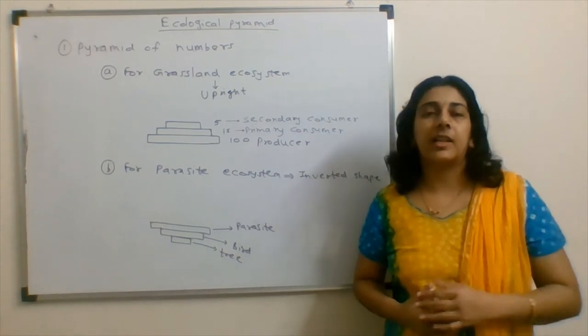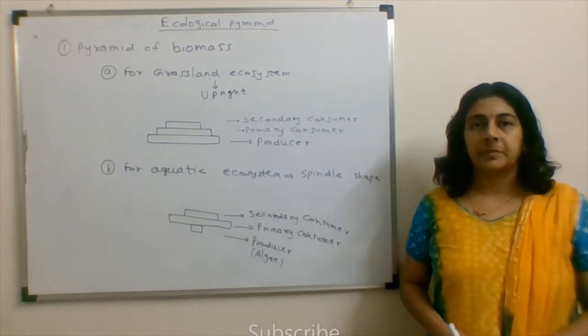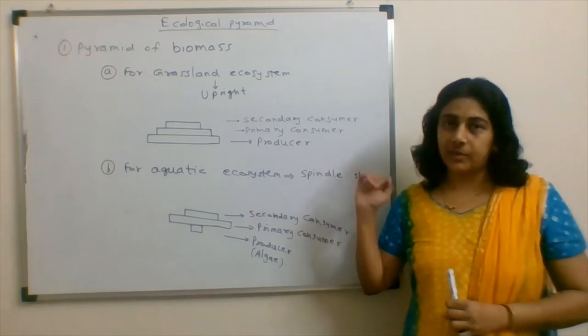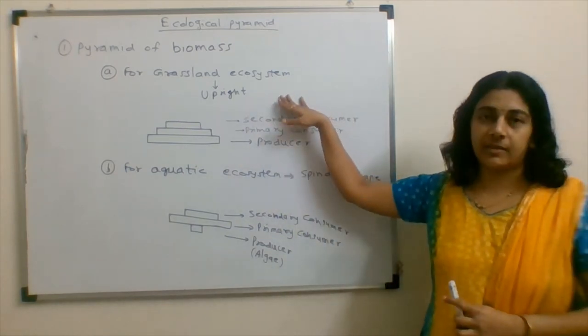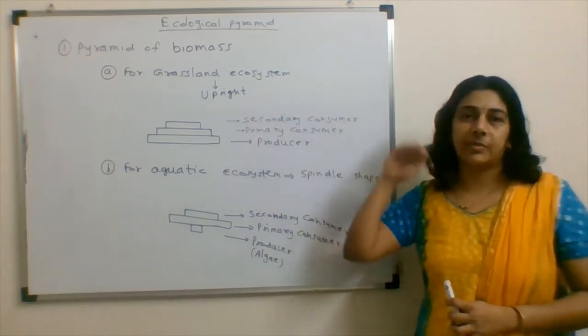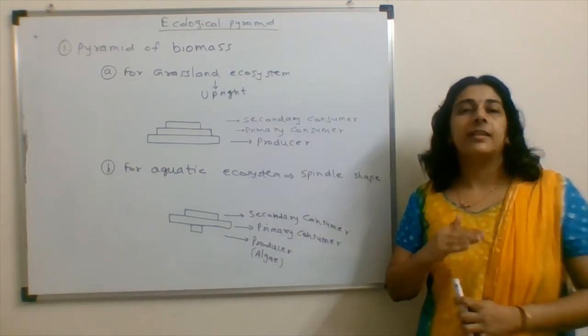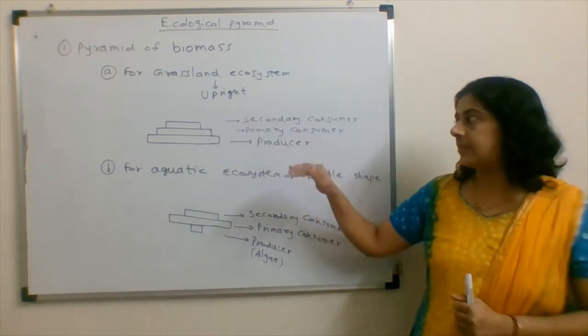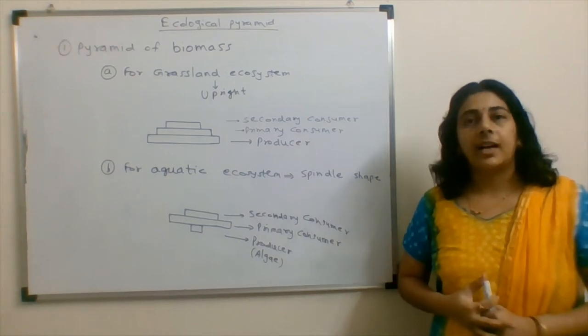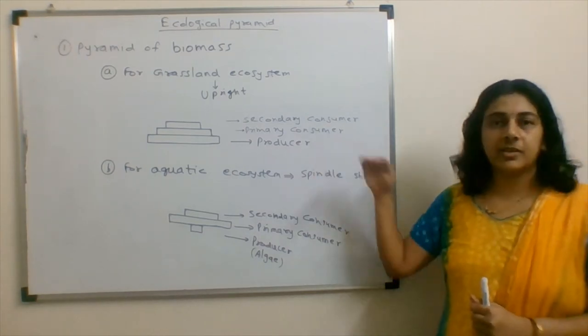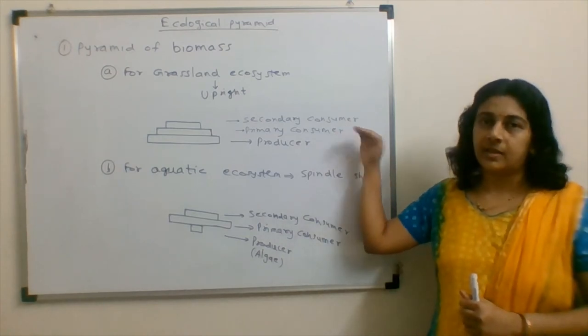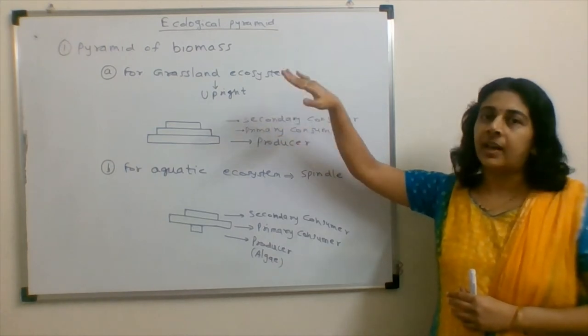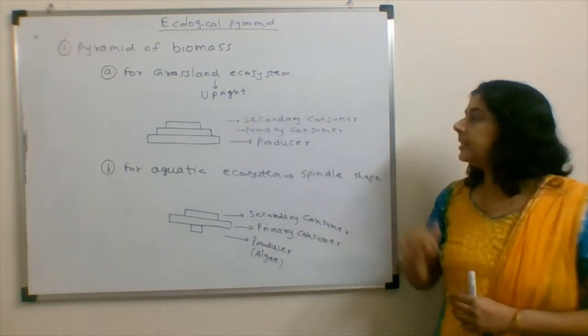Now, let's see what are the other types. The second one is pyramid of biomass. Here again, we are taking two examples. For grassland ecosystem, the pyramid of biomass would be upright. What is biomass? It's the dry weight of that particular organism. So when we say grassland ecosystem, producers would have the higher biomass than primary consumers and then the secondary consumers. So biomass would get decreased in case of grassland ecosystem and the pyramid becomes the upright pyramid.